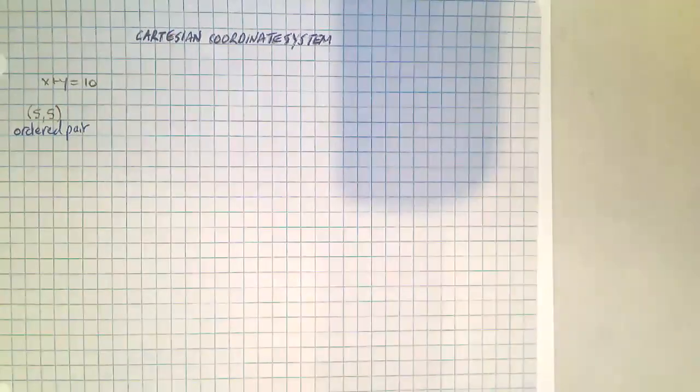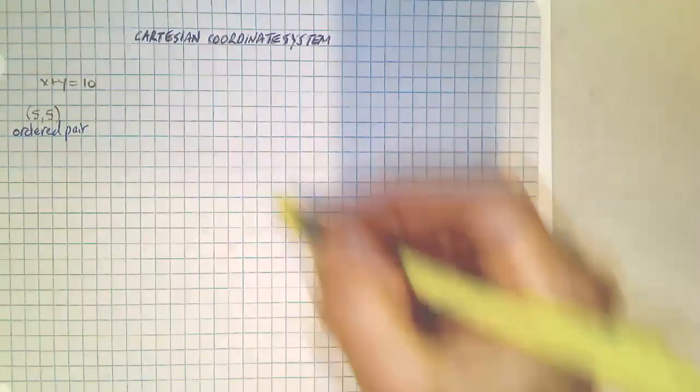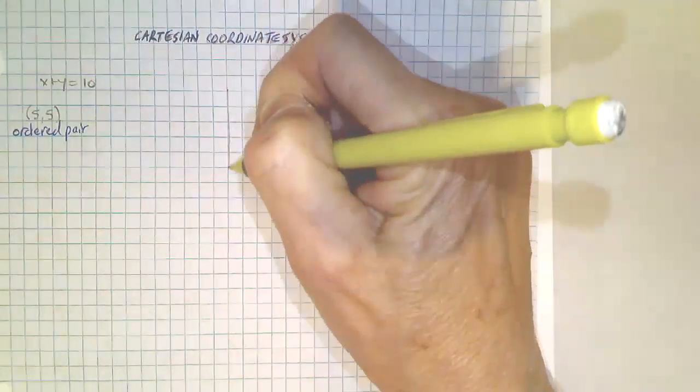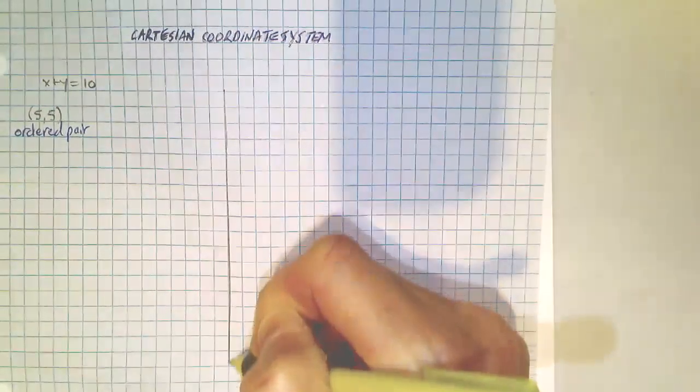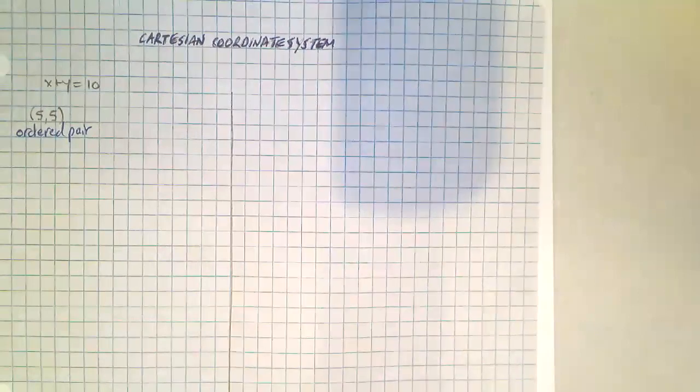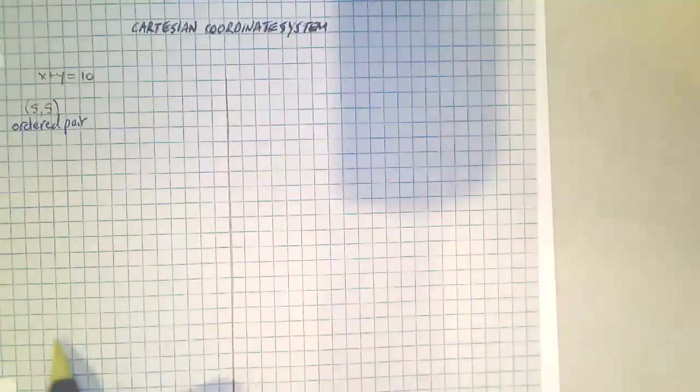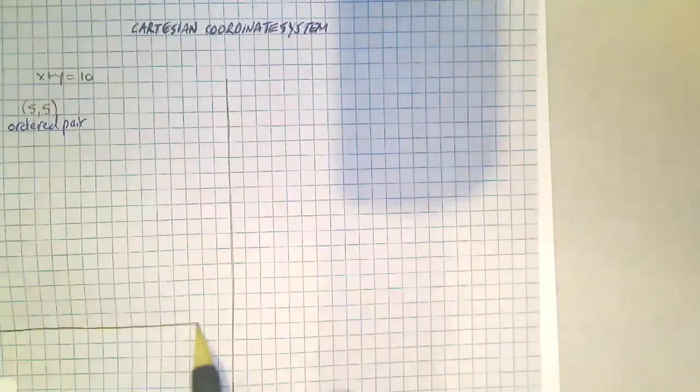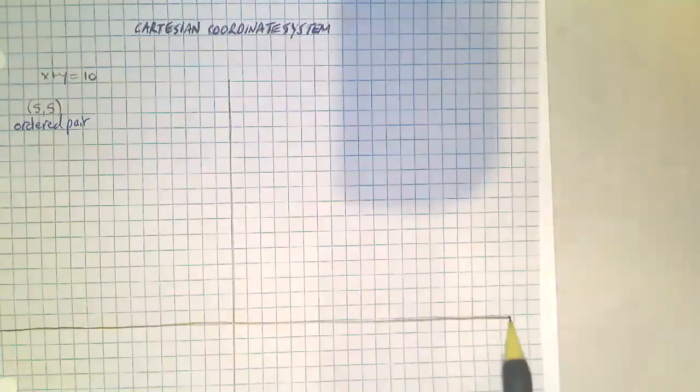And so he created this technique where if you pretend like this big piece of paper is his ceiling, he divided the ceiling down the middle, this way, and he divided the ceiling down the middle along a horizontal line.